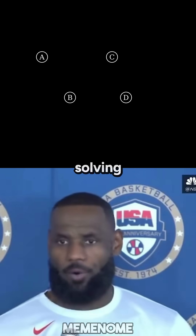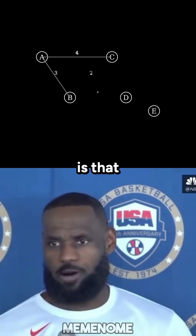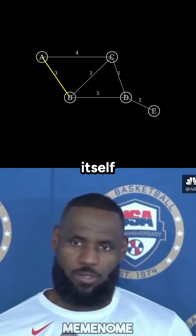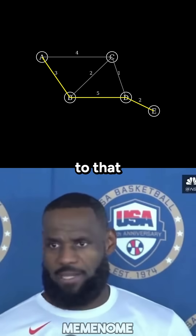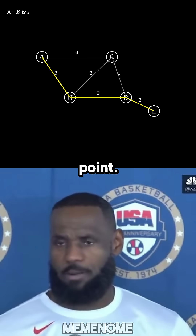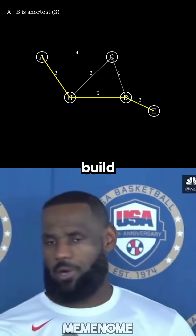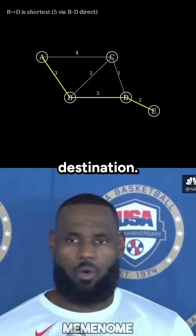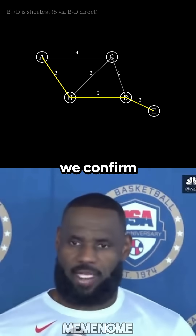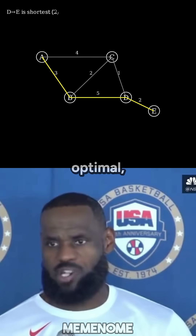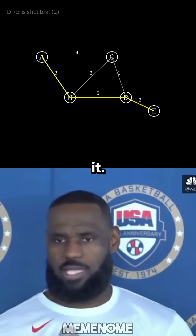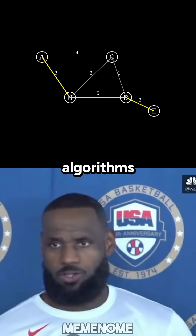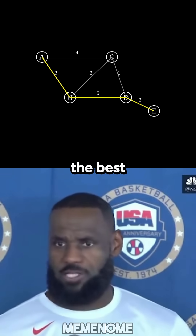A key insight in solving this problem is that every segment of a shortest path is itself the shortest way to get to that intermediate point. This principle allows us to build upon known shortest paths to find the best route to our destination. Once we confirm that a path to an intermediate node is optimal, we can safely extend it. This idea is foundational in many efficient algorithms that guarantee the best overall path.